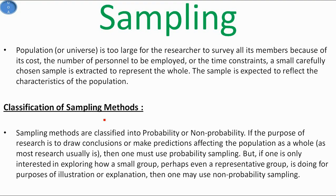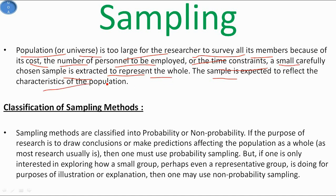Basically, population or universe is too large for the researcher to survey all its members because of cost, the number of personnel to be employed, or time constraints. A small, carefully chosen example is extracted to represent the whole. The sample is expected to reflect the characteristics of the population. Sampling methods are classified into two types: probability and non-probability.